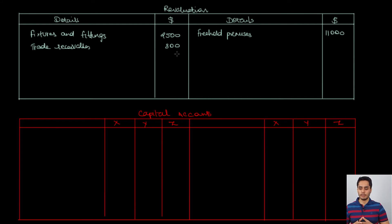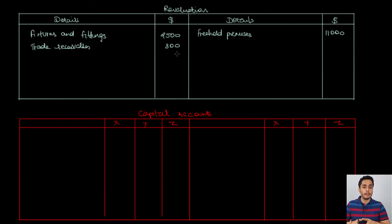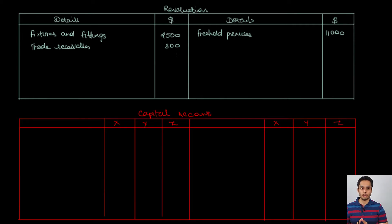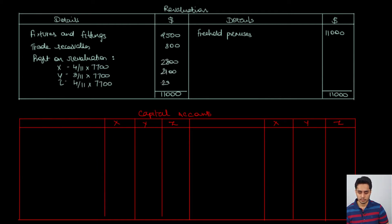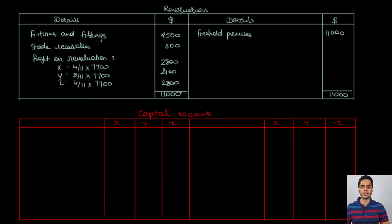Once the entries in the revaluation account are done, the credit side (gain) is greater than the debit side (loss), so there is a net gain on revaluation. The net gain is 11,000 minus the total debit side of 3,300, giving a total gain of 7,700 on revaluation. This gain is distributed to partners X, Y and Z in their old profit sharing ratio of 4:3:4, giving 2,800 to X, 2,100 to Y, and 2,800 to Z.